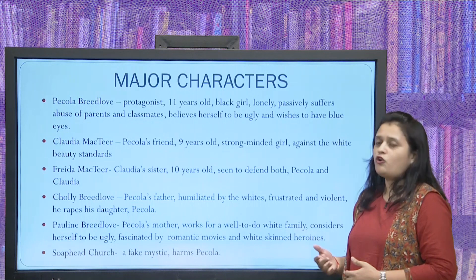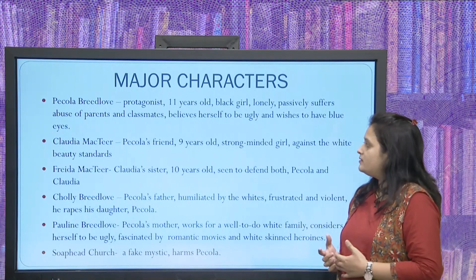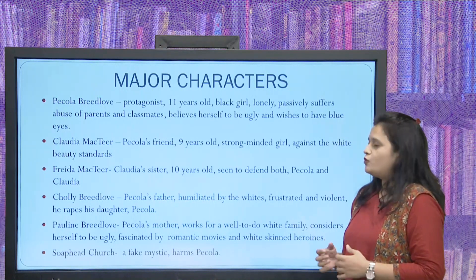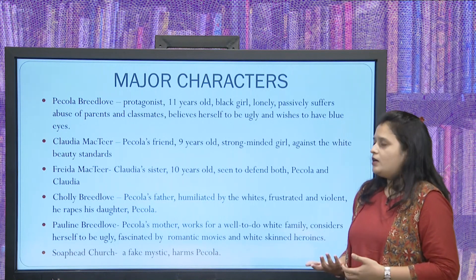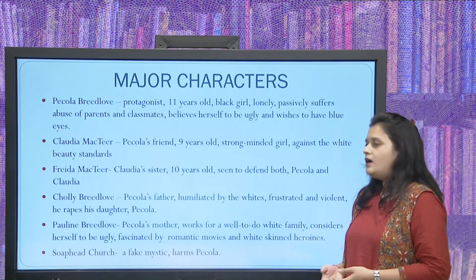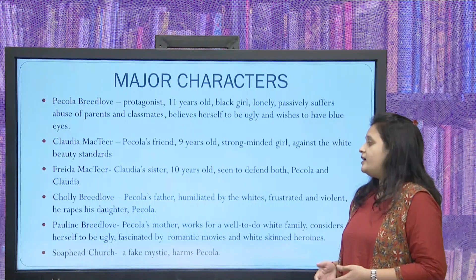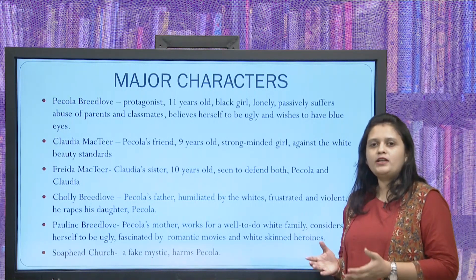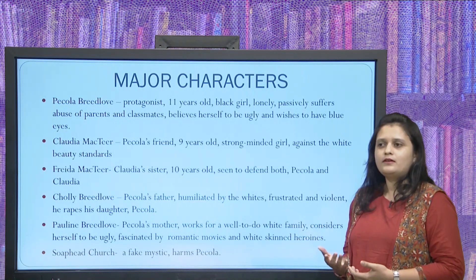Frieda MacTeer is Claudia's sister, ten years old, and is seen to defend both Pecola and Claudia. All three major characters are African-American young girls, which provides the platform for how the story develops. Cholly Breedlove is Pecola's father, who was humiliated by whites in his adolescence. This has made a negative impact on his mind — he is frustrated, violent, rapes his daughter Pecola, and is dangerously free. He does not fit the normal category of a father, who is assumed to protect his children.